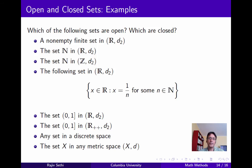Now a set can be open, it can be closed, it could be both open and closed, or it could be neither open nor closed. Which of these is the case will depend not only on the set but on the metric space within which it's being considered. You should go through the examples on this slide and determine for each set whether it's open, closed, neither, or both. You'll see that the set of natural numbers has very different properties when viewed as a subset of the real numbers than when viewed as a subset of the integers.